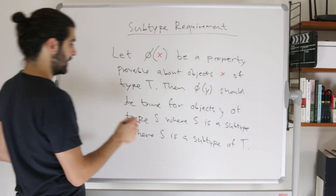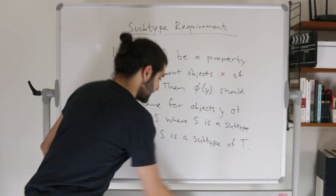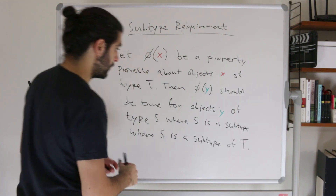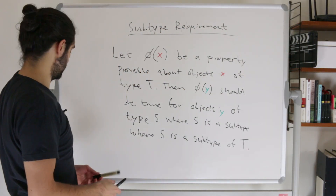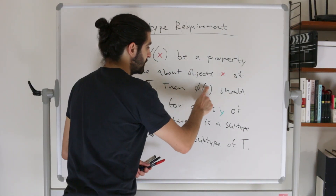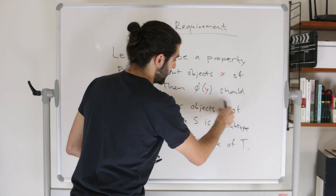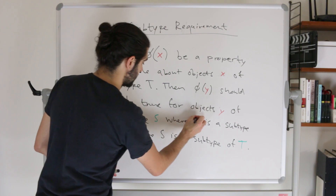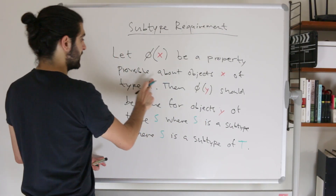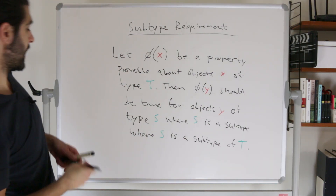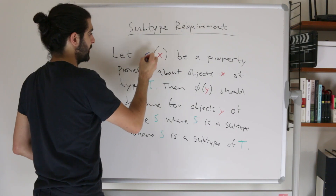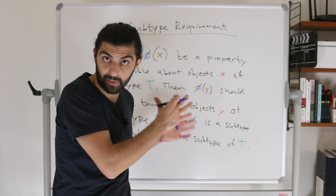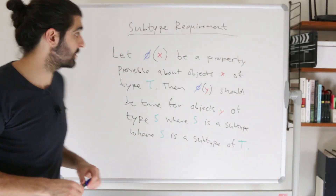Let's color-code the terms. X and Y are variables — instances — marked in red. T and S are types, marked in green. The property φ is marked in blue. So we have instances x of type T, instances y of type S, and a property φ. Those are all the key terms.